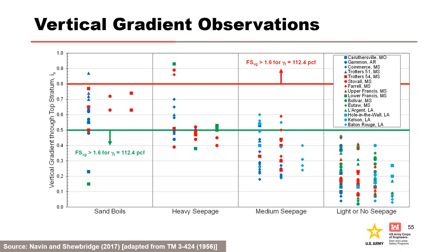Readings were used to set the vertical seepage exit gradient criterion of 0.5 as an empirical means of designing against backward erosion piping. Design methods in Technical Manual 3-424 are based on evaluating the vertical seepage exit gradient through the top stratum at the landside levee toe. The effective stress factor of safety is calculated based on vertical seepage exit conditions, with calculations compared to field performance observations leading to performance-based factors of safety—for example, factor of safety greater than 1.6 at the landside levee toe. Most sand boils on the lower Mississippi River occur due to defects in the top stratum, which is why gradients are lower than the theoretical value for uplift.